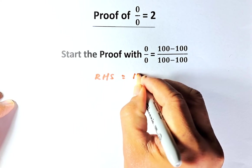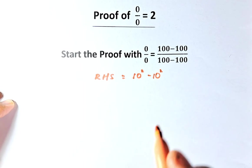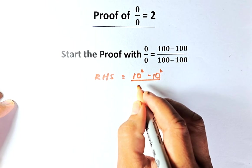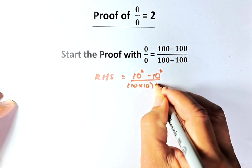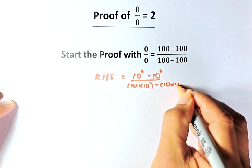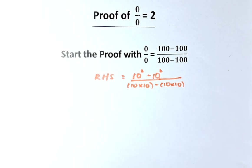So 100, we can replace 100 by 10 squared minus 10 squared. And then at the denominator, we're going to change it to 10 times 10, 10 times 10, which is 100 minus 10 times 10. So there's no special thing that we've done. We just convert 100 to 10 squared. Another 100 is 10 squared. And the denominator, we replace 100 with 10 times 10. And the second one is also 10 times 10.